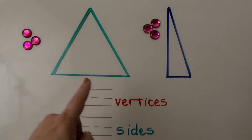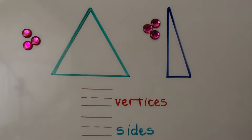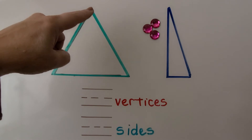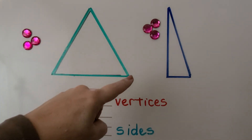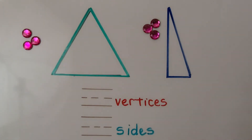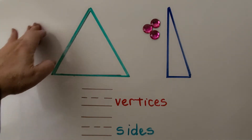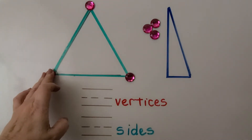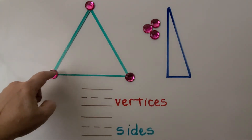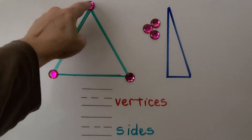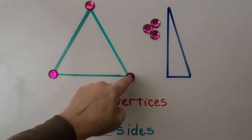Here we have a green triangle and a blue triangle. We can trace the green triangle with our finger. We can start at any vertex — we can start here and come down, and then we go across and then back up to where we started. And we can put a counter on each of its vertices — here, here, and here. It's where two lines meet: these two lines meet at this vertex, these two lines meet at this vertex, and these two lines meet at this vertex.